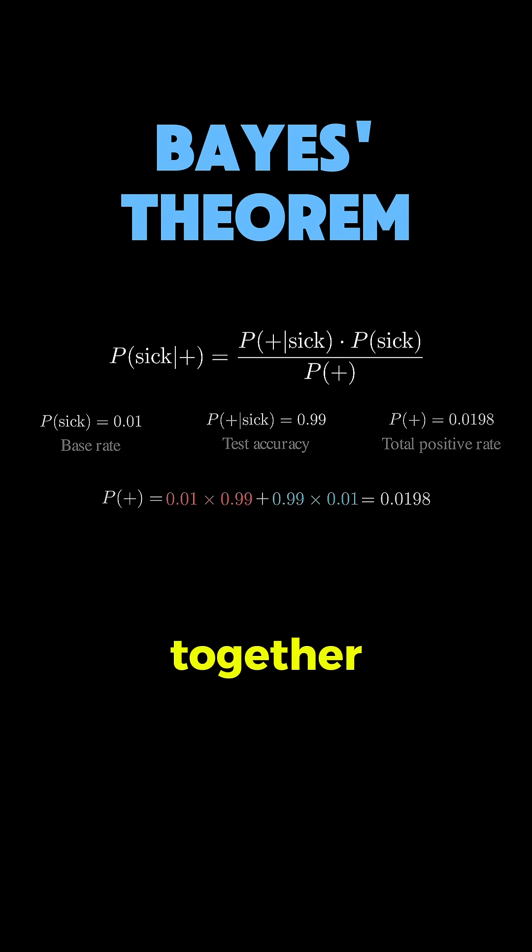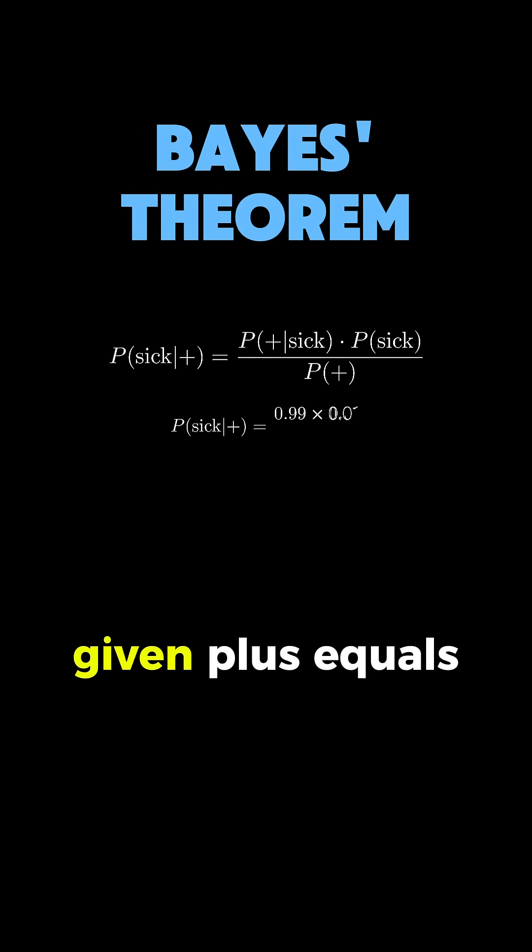Now, we can put it all together. P(sick|+) equals 0.99 times 0.01 divided by 0.0198.